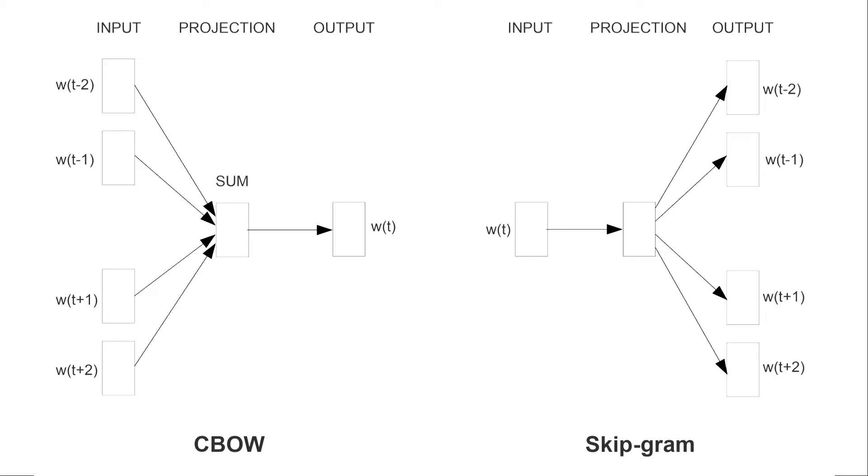CBOW stands for Continuous Bag of Words. Under the CBOW model, it learns the embedding by predicting the current word based on its context. Next, the Continuous SkipGram model learns by predicting the surrounding words given the current word.